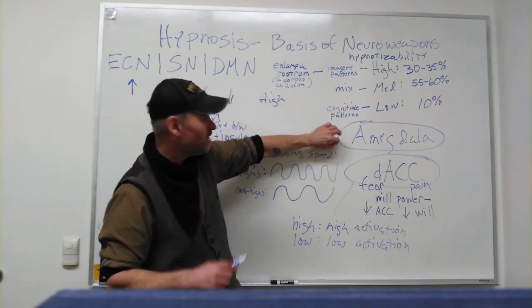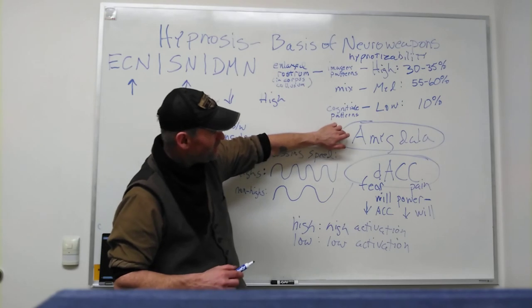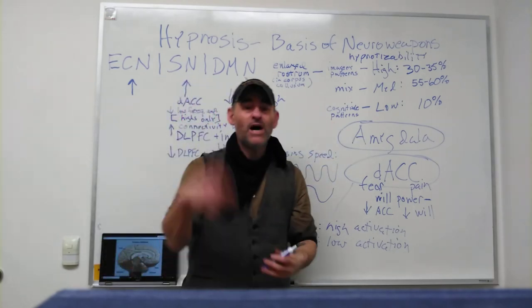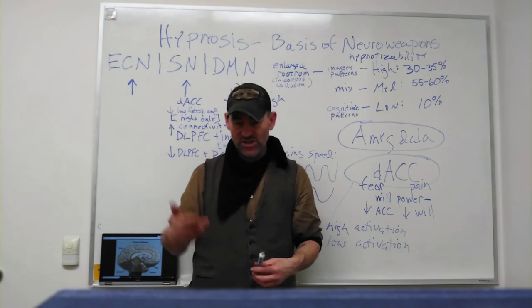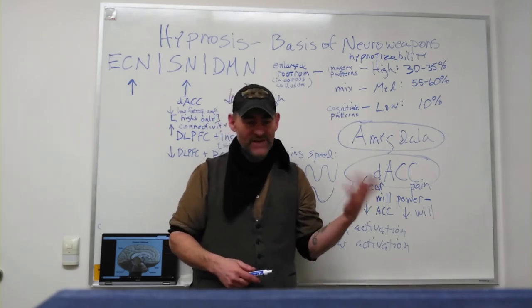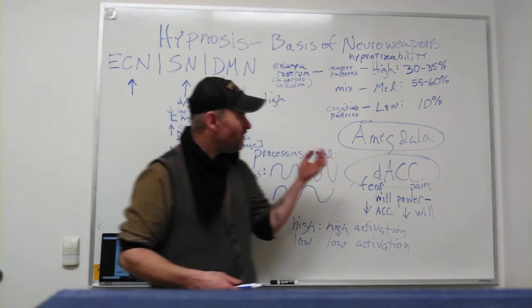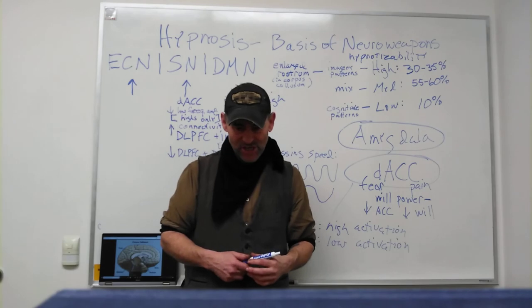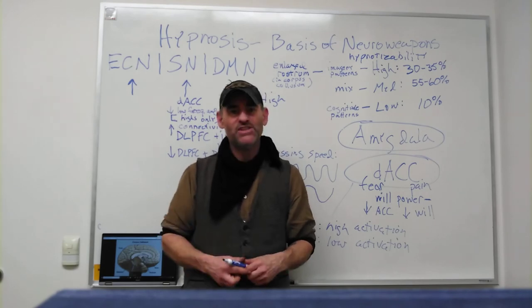In neuroweapons they have found that you can trigger the amygdala to override, to automatically override actions. This is called a fast reflexive control. They found a way to trigger the amygdala to override things and get your fear responses up.